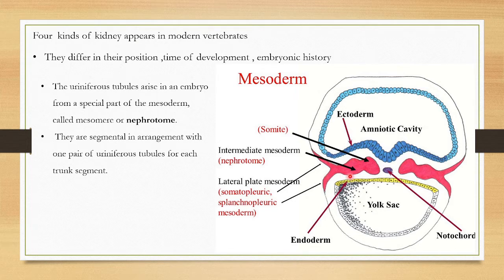The intermediate mesoderm is called the nephrotome, which actually develops into the nephrons or uriniferous tubules. The nephrotome means segments. Each segment gives rise to a pair of uriniferous tubules.